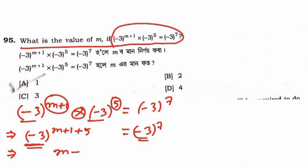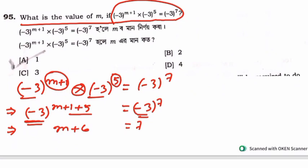So m plus 1 is equal to 7. I am going to write this out. Therefore A is equal to m, and A is equal to minus 6. So m equals minus 6.